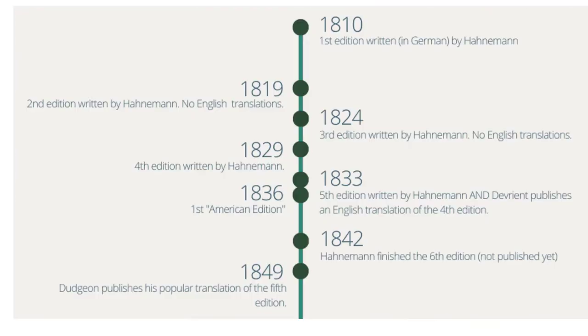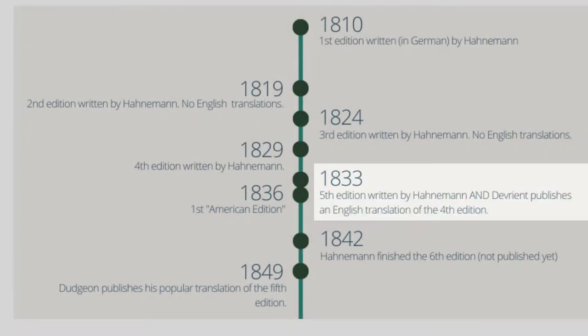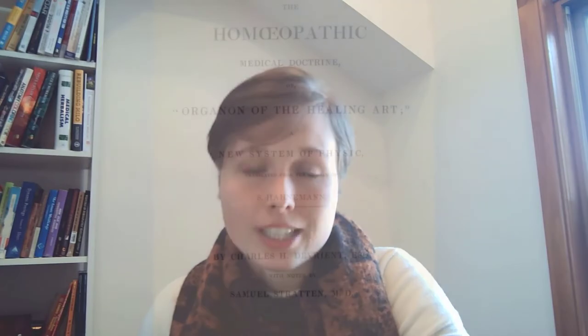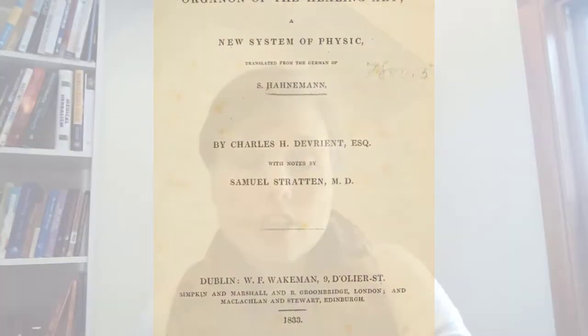The fourth edition was written in 1829. It was translated into English first by an Irish homeopath Charles Devriant, edited by Samuel Stratton — so you will see Samuel Stratton's name more often than Devriant's. They published their translation in 1833, the same year Hahnemann published his fifth edition, so it was basically out of date by the time it went to press. But at least we finally had an English translation — this was the first English translation done of the Organon. It was reproduced for many years afterwards, and the introduction and preface are included. In the United States, this translation was published as the so-called American editions, the first of which was published in 1836.